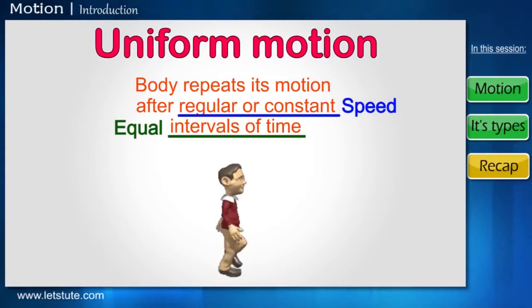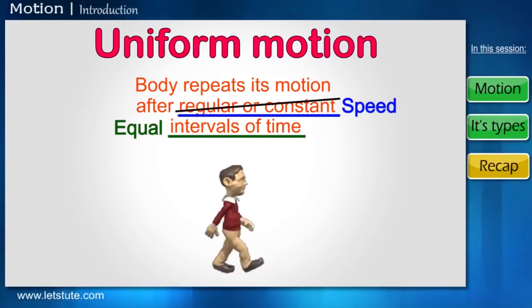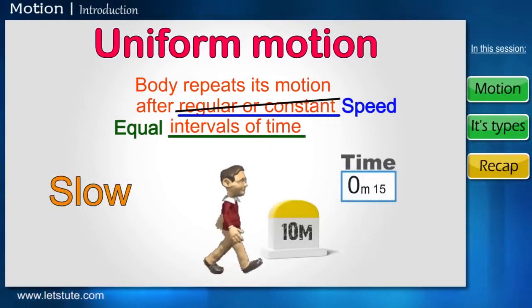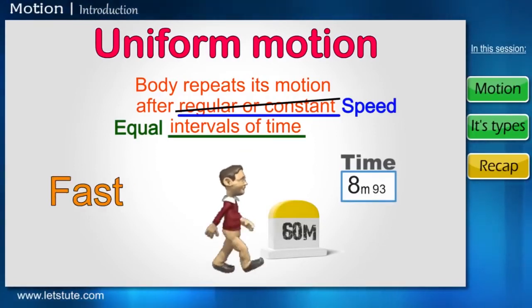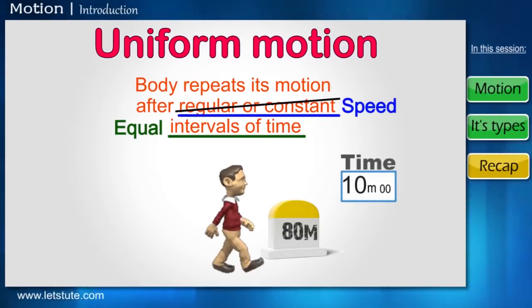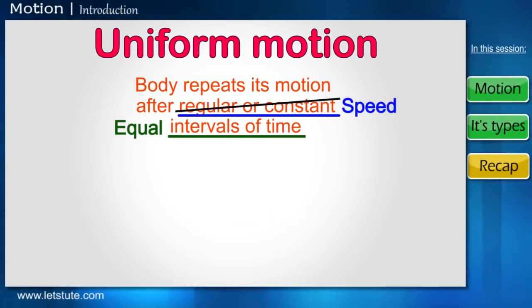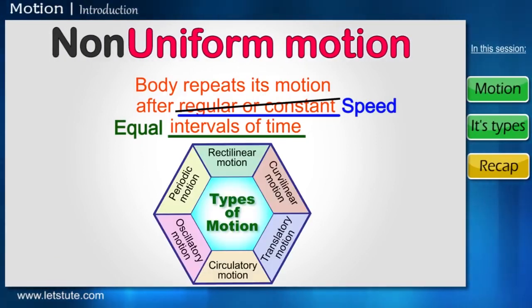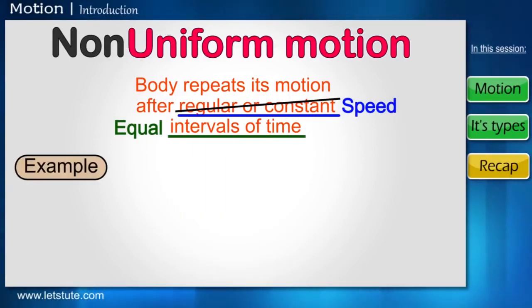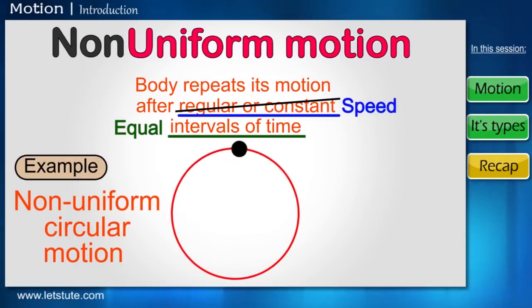But what if the man is not covering a constant length in equal interval of time? Say that at times he walks slowly, taking more time, and sometimes he walks fast, taking comparatively or lesser time. Then these fluctuations or variations decrease the uniformity of motion, and hence is known as non-uniform motion. This concept, too, can be applied to other types of motion. So, what happens if this is carried out in a circular path? We get non-uniform circular motion. Simple, isn't it?